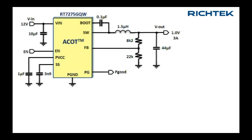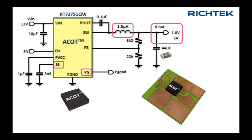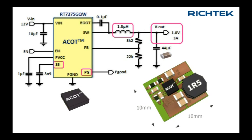Here is an example of a 12V to 1V 3A supply, with programmable soft start and power good signal, and uses small low-cost components. The small DFN 3x3mm package allows for a very compact layout, measuring only 10x10mm while achieving powerful performance.